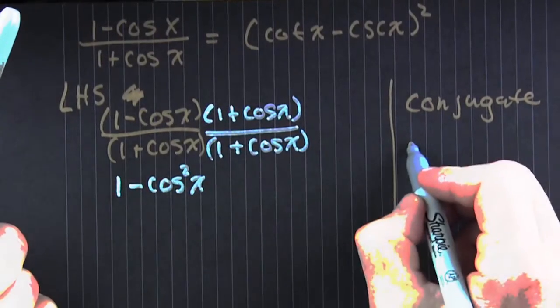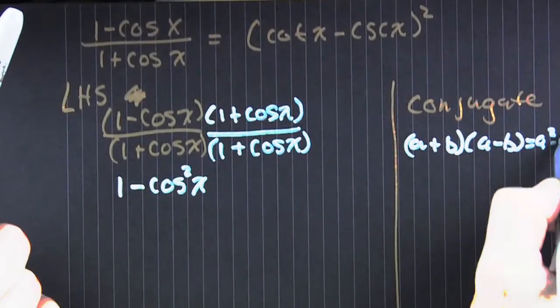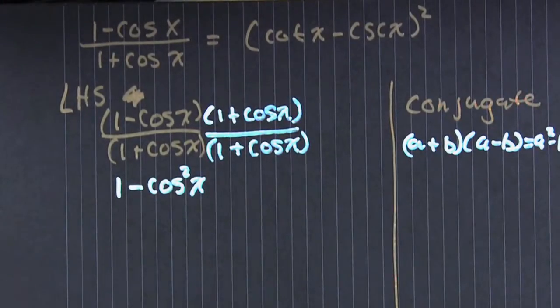Multiplying out that top, you see you have the difference of squares. A plus B, A minus B multiplies out to A squared minus B squared. Now what?